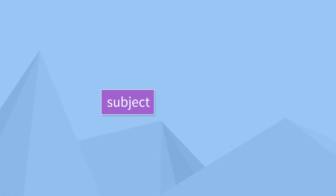In general, sentences should always have two things: a subject and a verb. Now it's very common for the subject to come before the verb; however, it's usually easier to explain what they are and their relationship by explaining the verb first.